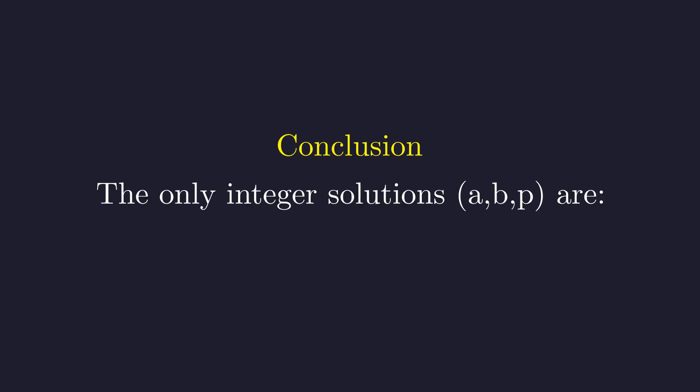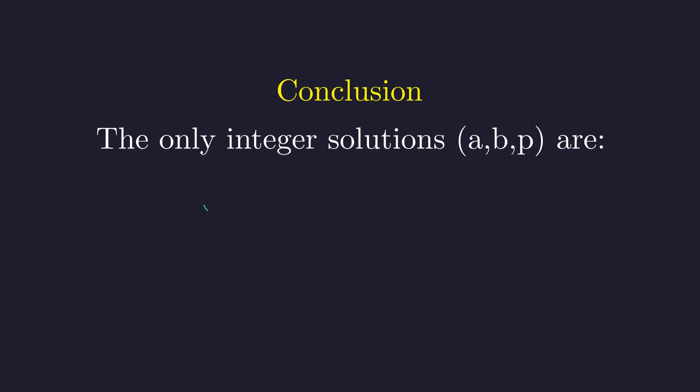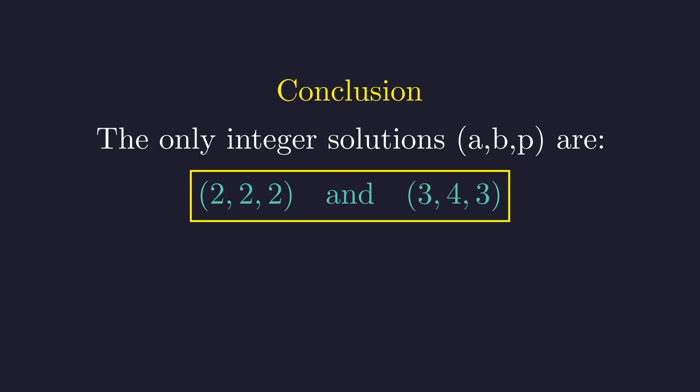After a thorough analysis, we can summarize our findings. This Diophantine equation, which spans different areas of mathematics, has only two sets of solutions: A equals 2, B equals 2, and P equals 2; and A equals 3, B equals 4, and P equals 3. Thank you for joining me on this mathematical journey. If you enjoyed exploring this Diophantine equation and learned something new about modular arithmetic and number theory, please consider giving this video a thumbs up and subscribing for more mathematical adventures.